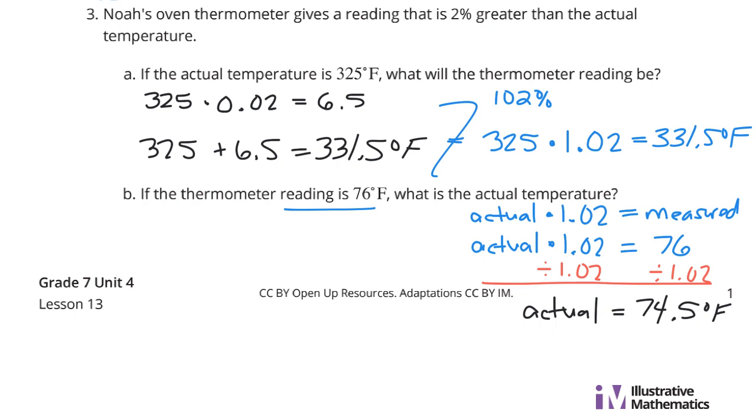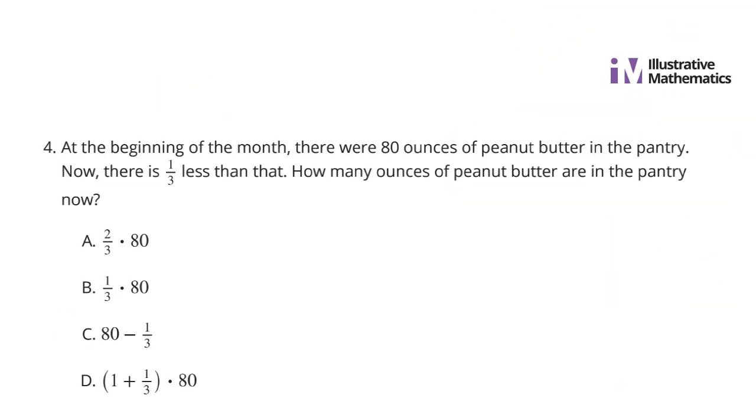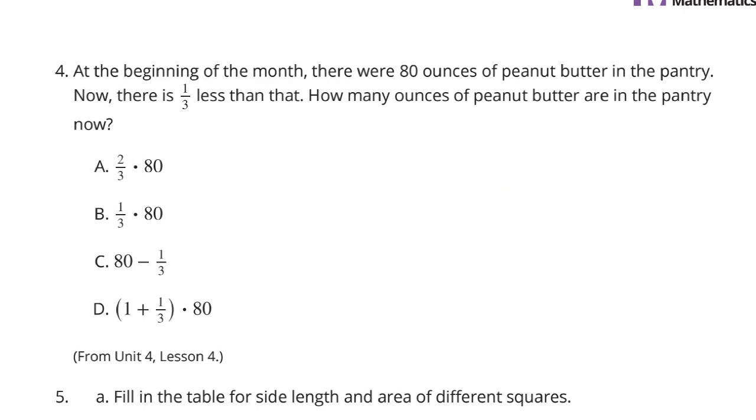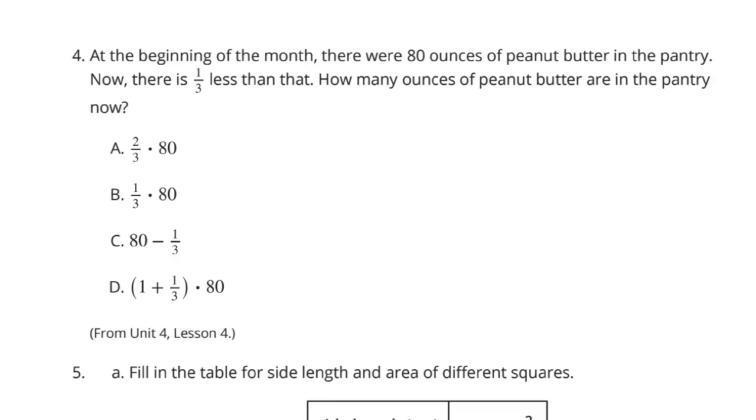Let's continue on to question 4. At the beginning of the month, there were 80 ounces of peanut butter in the pantry. Now, there is one-third less than that. How many ounces of peanut butter are in the pantry now? This is review from Unit 4 Lesson 4. Well, one-third less than that.